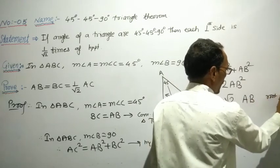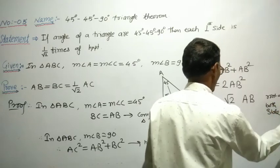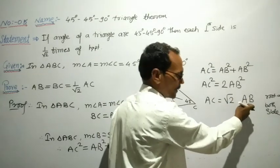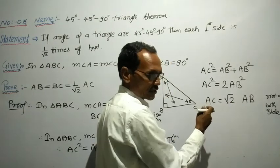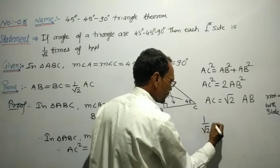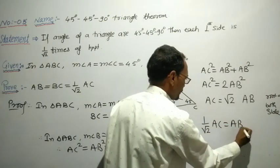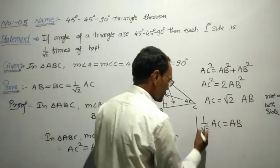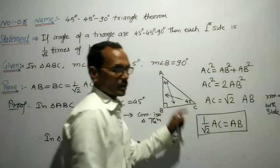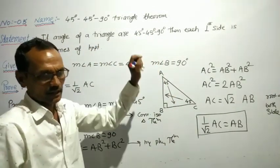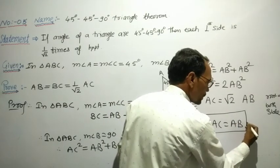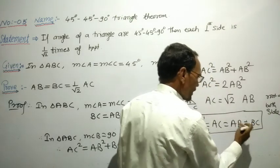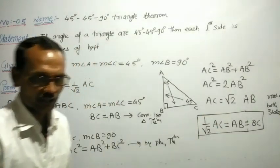Taking square roots on both sides, this gives us root 2 multiplied by AB on the right side. Converting this to the left side by dividing both sides by root 2, we get 1 by root 2 times AC equals AB. This completes the proof of the 45-45-90 degree triangle theorem. Since AB also equals BC, each perpendicular side equals 1 by root 2 times AC, the hypotenuse. This is the proof.